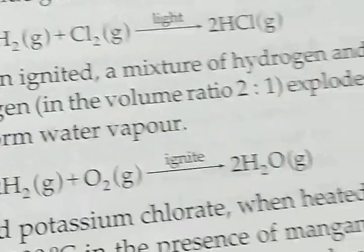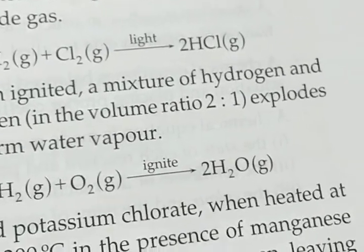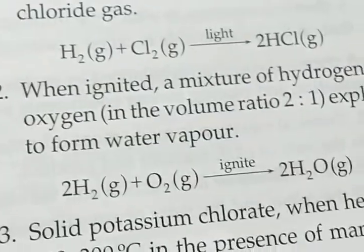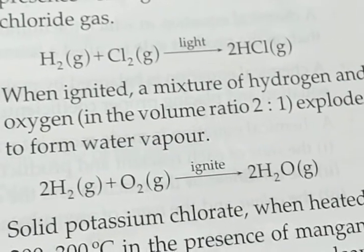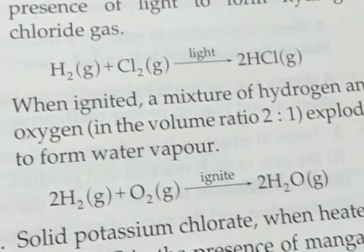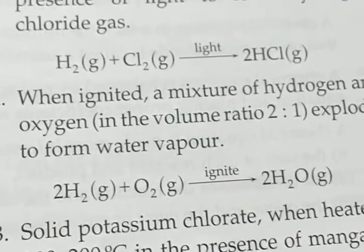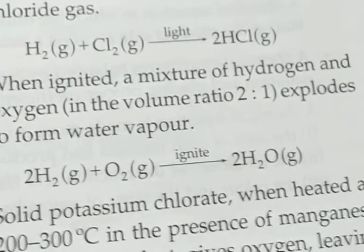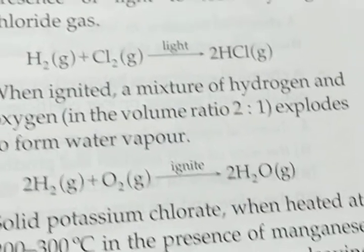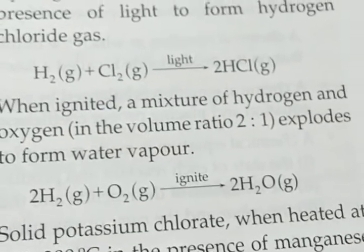So when ignited, a mixture of hydrogen and oxygen in the volume ratio 2 is to 1 explodes to form water vapor. So if hydrogen in the presence of oxygen is ignited, they combine together to form water. So in case of hydrogen, that is gas, oxygen gas, it is written down in the bracket. Ignite means we are lighting it with fire to form 2H2O, that is gas.